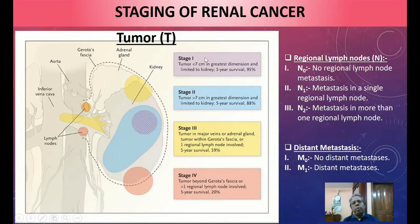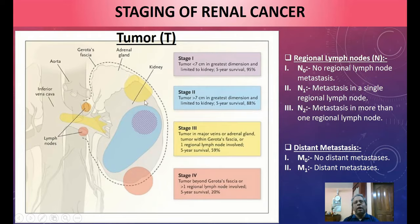In Stage I, the tumor is less than 7 cm in greatest dimension and limited to the kidney. The result of surgery is very good — five-year survival is 95%. The outcome depends on the size of the lesion.